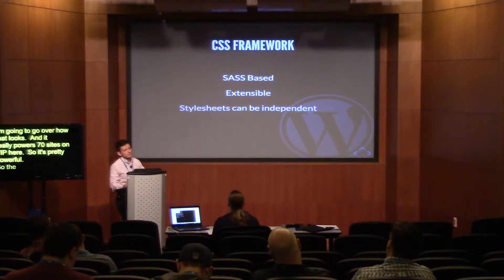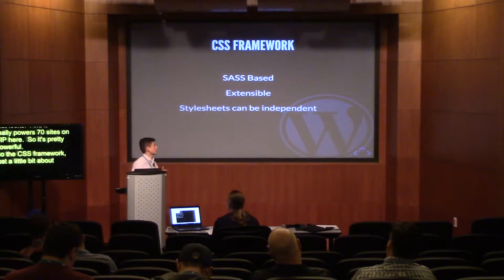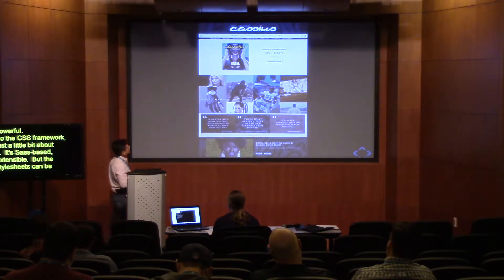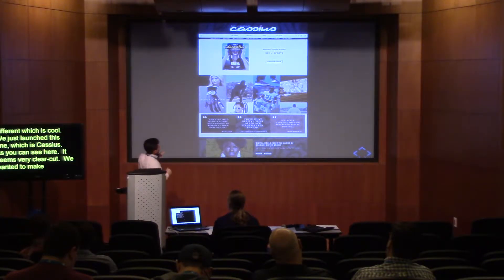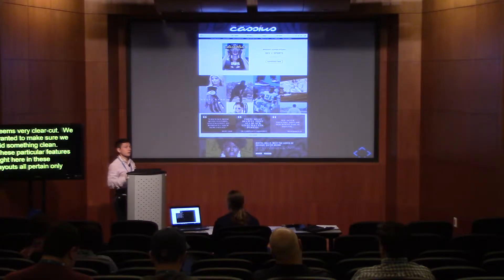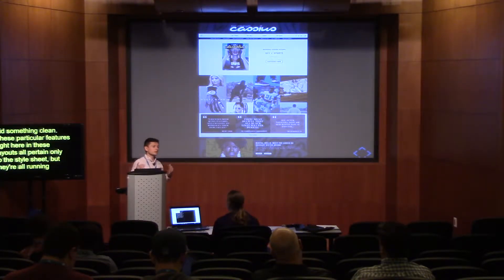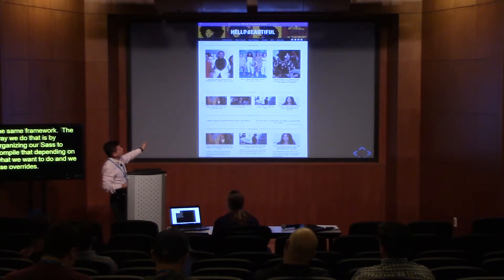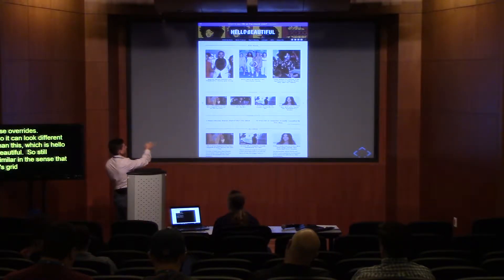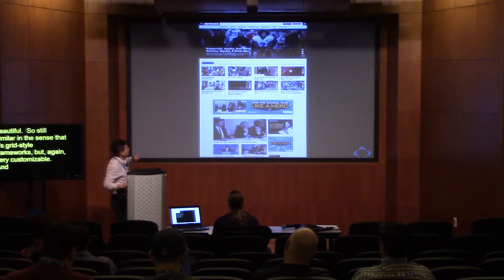The CSR framework is SAS-based, and the style sheets can be very different, which is really cool. We just launched Caches, which seems very clean and clear-cut. These features and layouts all pertain only to the style sheet, but they're all running on the same framework. We organize our SAS to compile depending on what we want and use overrides. So it could look very different — like Hello Beautiful, which is still a grid-style framework but very customizable. And our other one, News One, is really news-centric with a lot more content.